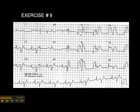Moving to the anterior leads, V1 through V3 — it's difficult to tell which is the sinus beat, but looking straight down in line with V2, this looks like a normal beat, and therefore the other is the PVC, since we know we have a bigeminal rhythm. There's ST elevation in V1, ST elevation in V2, and ST elevation in V3 — marked ST elevation.